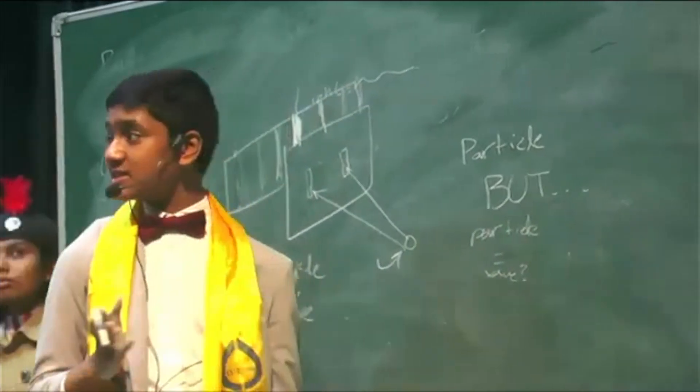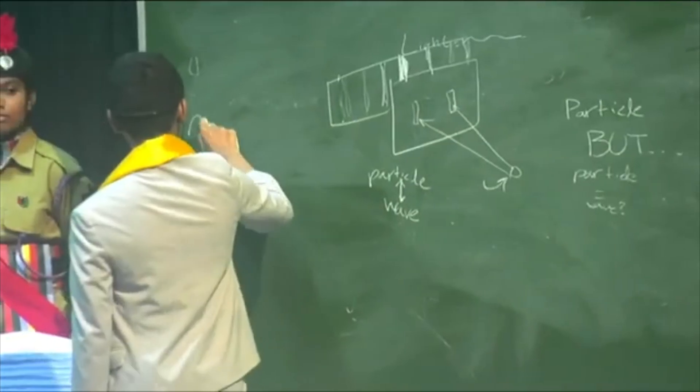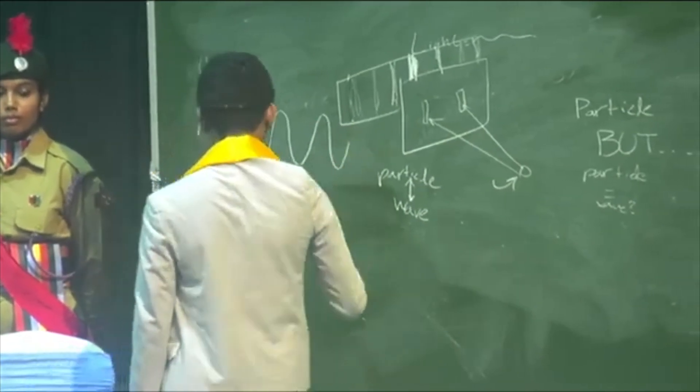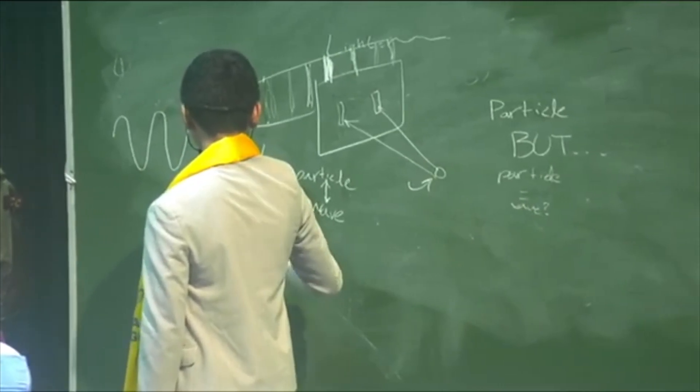So essentially, there was a physicist named Louis de Broglie. And what he showed was that every particle can essentially be described by a wave with very, very, very high wavelength.